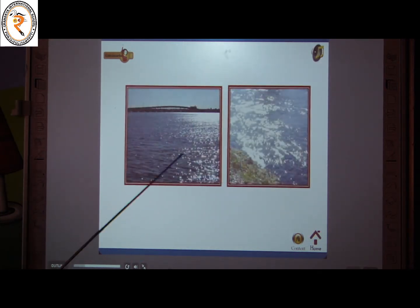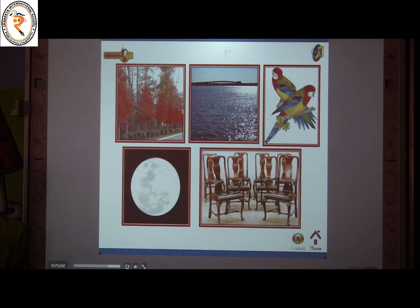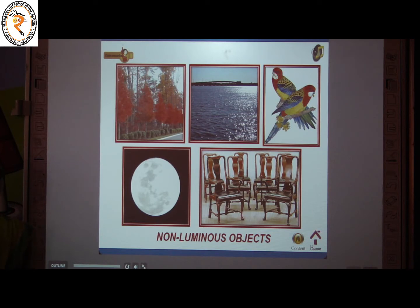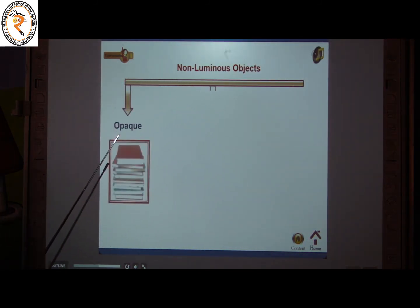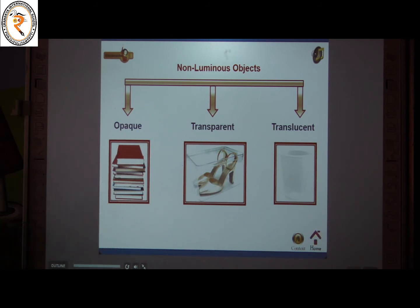Now look at these pictures — trees, moon, rivers, birds, chair. These are all non-luminous objects because they do not emit light by their own; they reflect back the light of other luminous objects. Non-luminous objects are categorized into three types: opaque, transparent, and translucent.